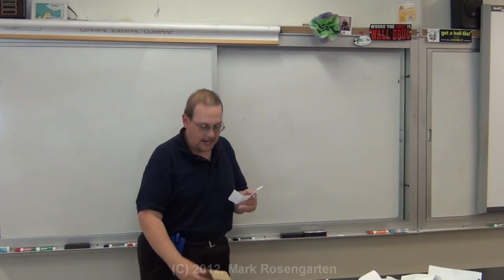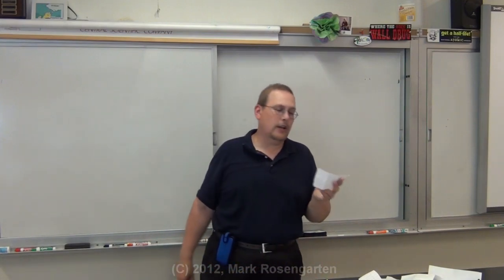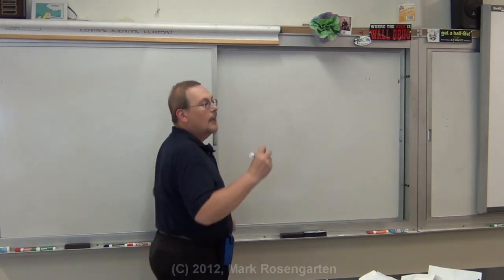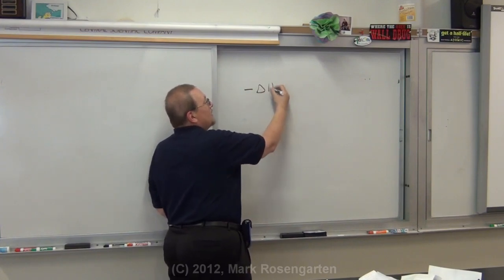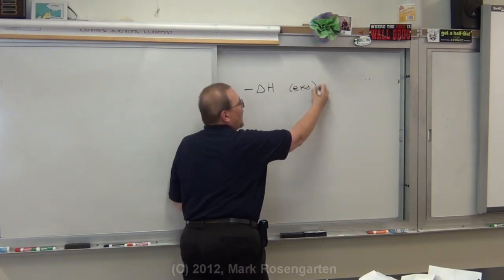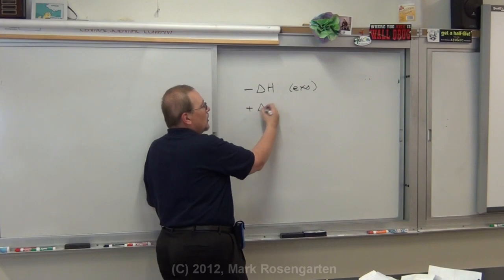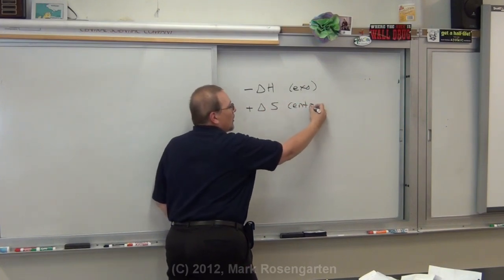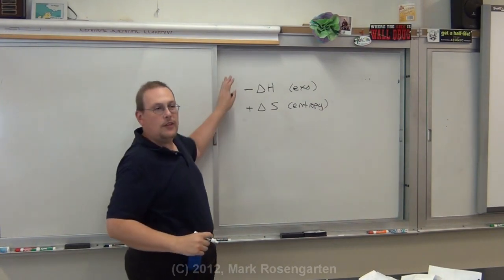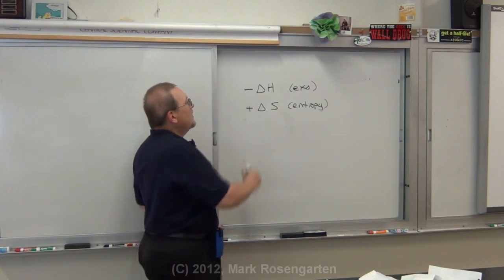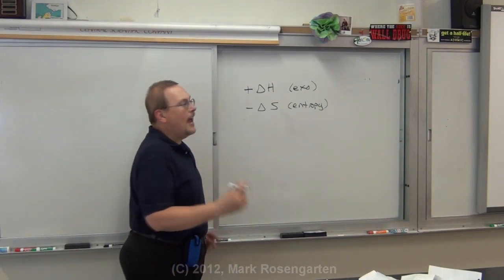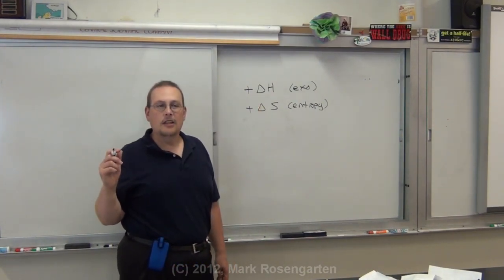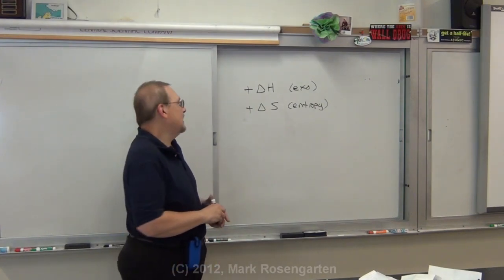Can we go over equilibrium and spontaneous reactions? Let's do spontaneous reactions because they are related. Nature favors two things: a negative change in potential energy — that's an exothermic reaction — and a positive change in entropy. Anything that has both of these characteristics will be spontaneous. Anything with the opposite characteristics will be non-spontaneous. Any reaction where one is favored and the other isn't can reach equilibrium.